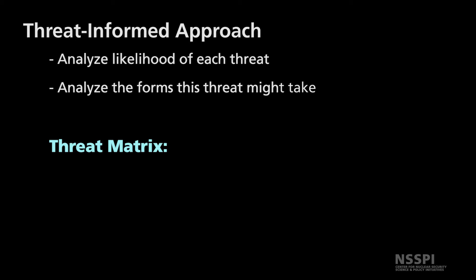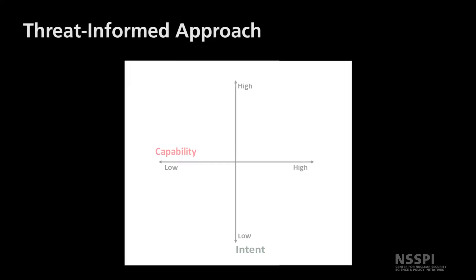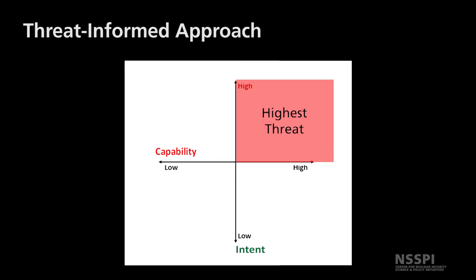A threat matrix analyzes the intent of an adversary times their capabilities. The intent would be how determined an adversary is to access protected material, and the capability would mean the material means by which they would access the nuclear material. These terms are then placed on a matrix like the one you see here. The top right box has the highest threat; the bottom left contains the least threatening adversaries.